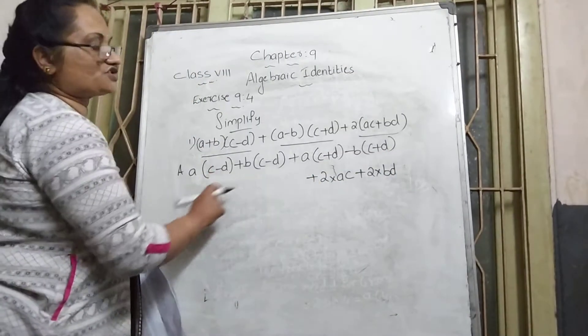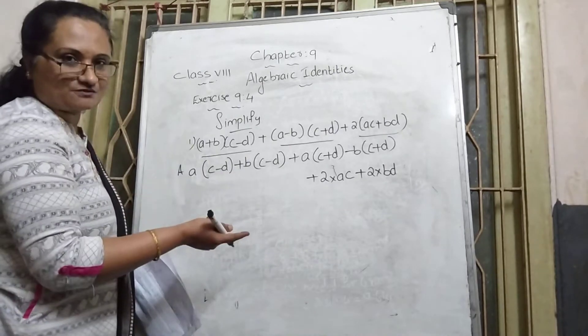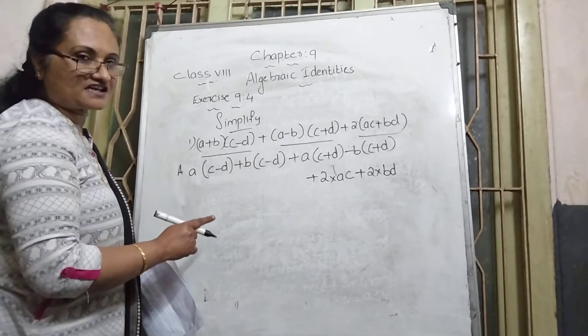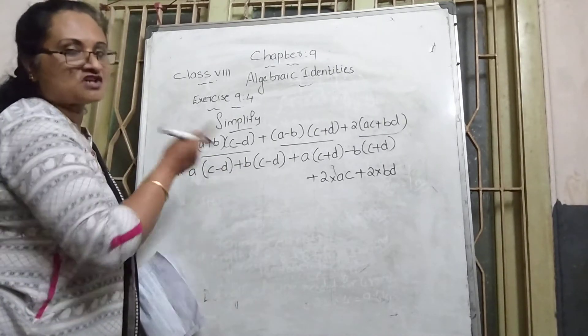Next, the third term: 2 is multiplied with the inside bracket. So 2 is multiplied with the first number ac, and 2 is multiplied with the second term bd. Now we need to open those brackets using the distributive property — the outside number is multiplied to each term inside the bracket.